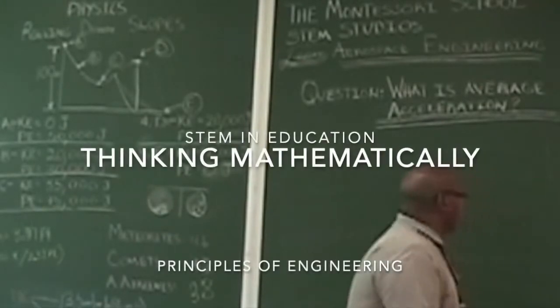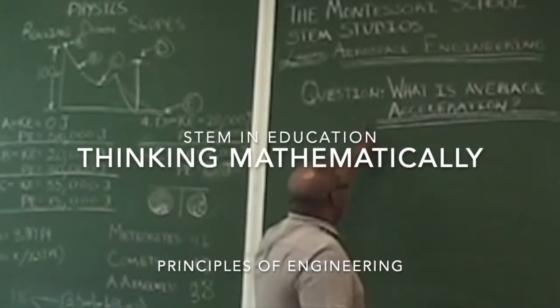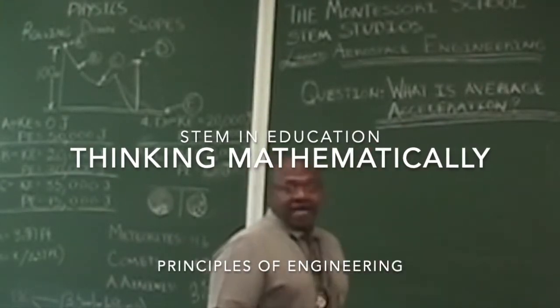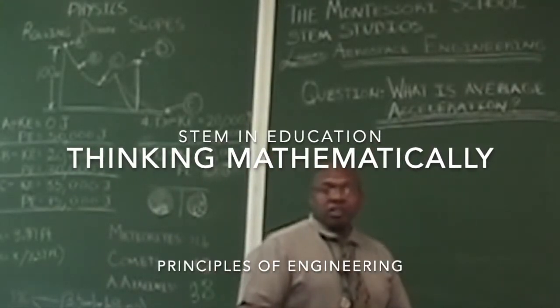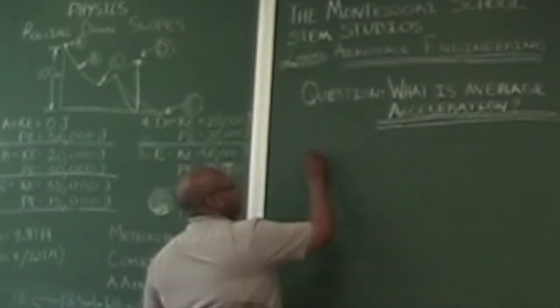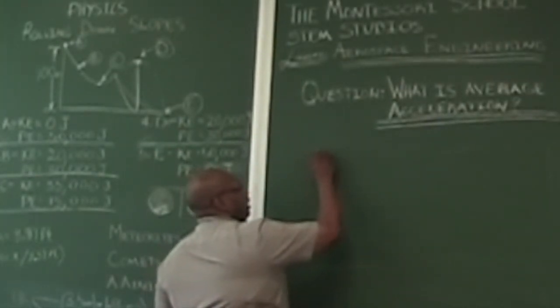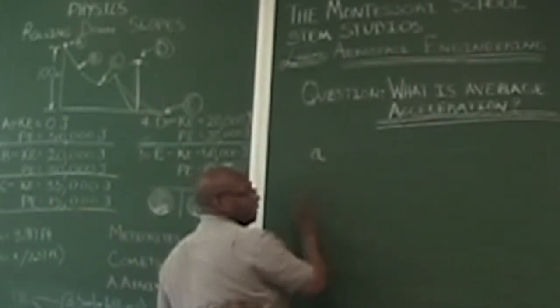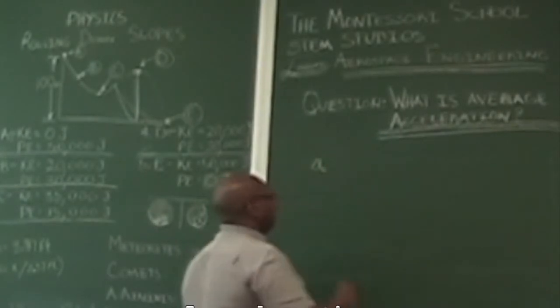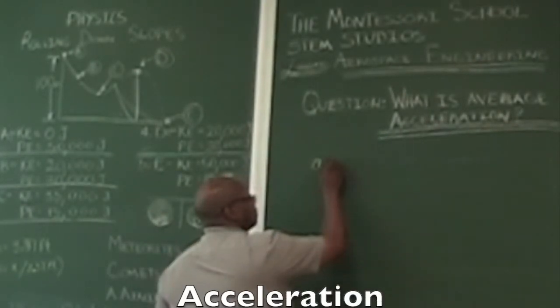Today we are asking the question: what is average acceleration? The formula for average acceleration is A. A represents acceleration.